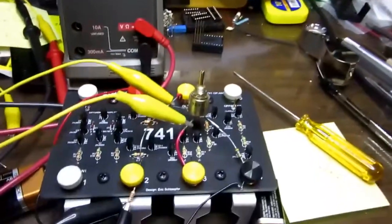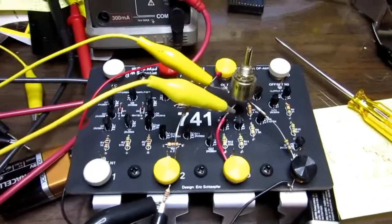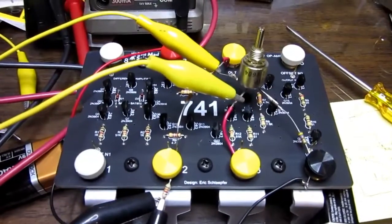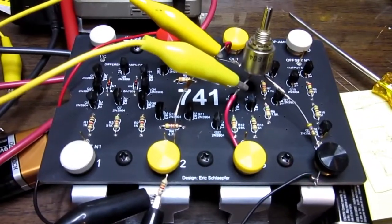So what we have here is a functioning op amp based on the internal circuit of the original 741, implemented with discrete transistors and resistors.